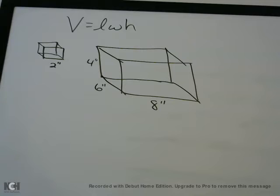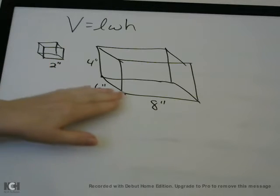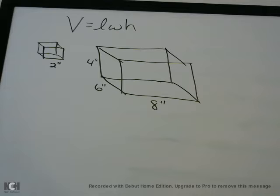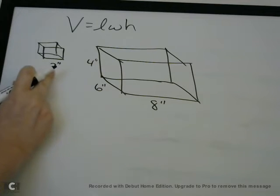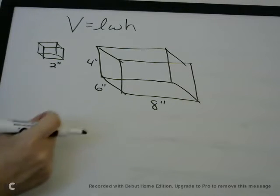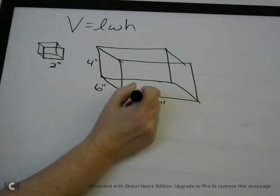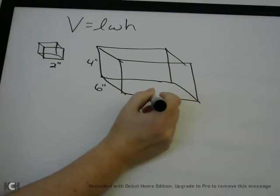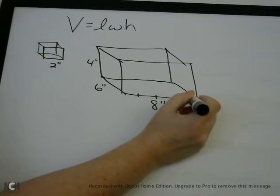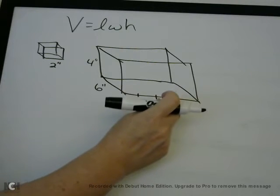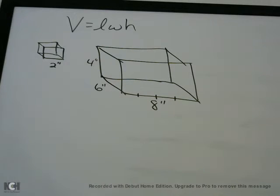I'm going to show you two ways to do this. One is just using logic — if you get into the test and cannot remember anything about volume, you can figure this out logically. The block is 2 inches, so across the bottom we can put one block for 2 inches, another for 4 inches, another for 6 inches, and one last one for 8 inches. So we can get 4 blocks across the bottom.